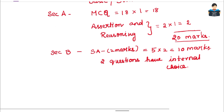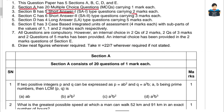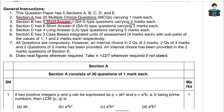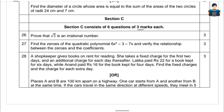Now if we look at the next Section C, there are six short answer type-2 questions. These carry 3 marks each.